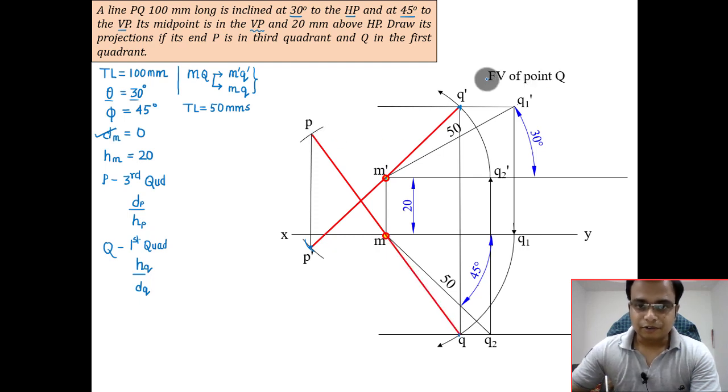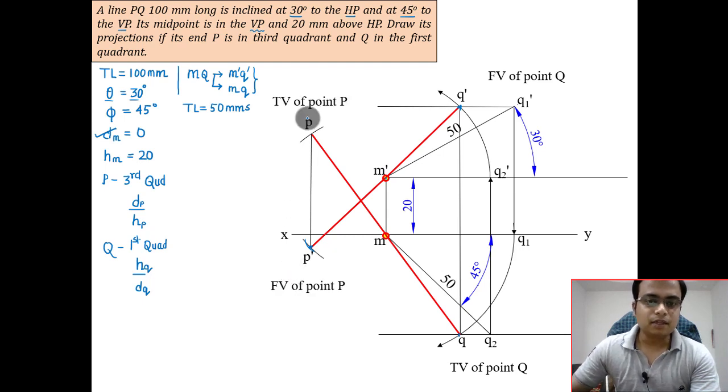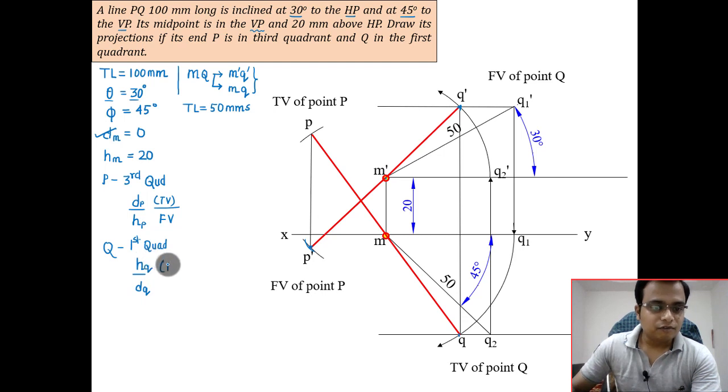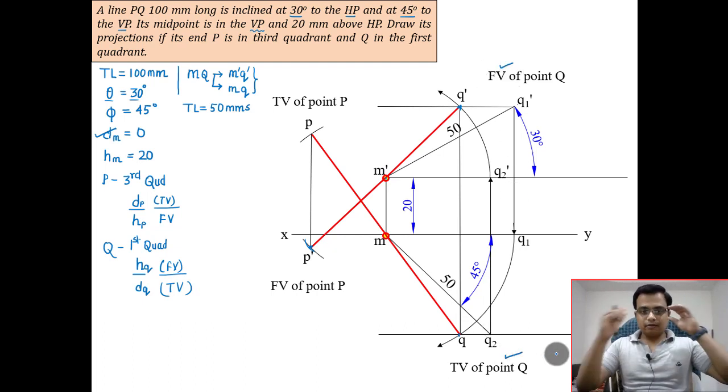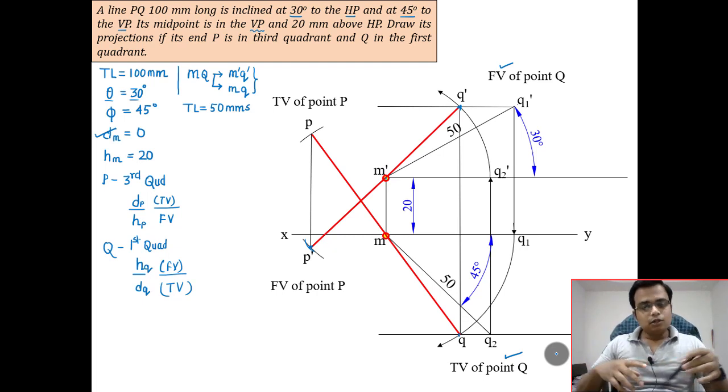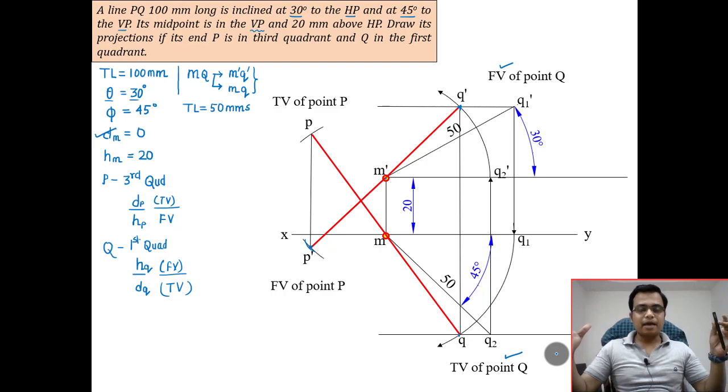This is front view of Q, top view of Q, front view of point P, and top view of point P. Since P is in the third quadrant, d is associated with top view, so top view is above XY and front view is below XY. Since Q is in the first quadrant, front view is above XY and top view is below XY. That was all for today. I'll see you again in the next video. Until then, take care and have a nice day.